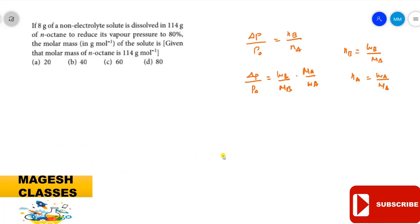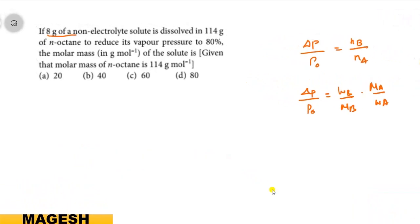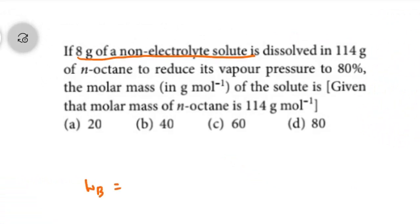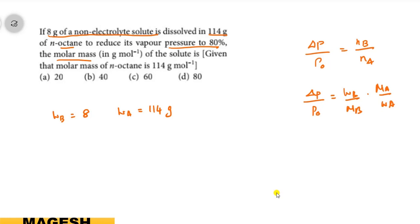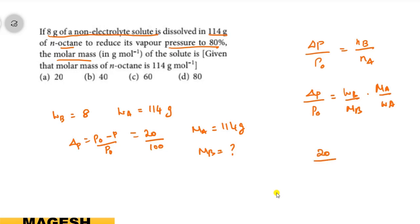Here, A is the solvent and B is the solute. Weight of solute W_B equals 8 g, weight of solvent W_A equals 114 g, and the vapor pressure is reduced to 80%, so ΔP = P° − P = 20, and P° = 100. The molar mass of n-octane M_A equals 114 g/mol. Substituting: 20/100 equals (8/M_B) × (114/114).